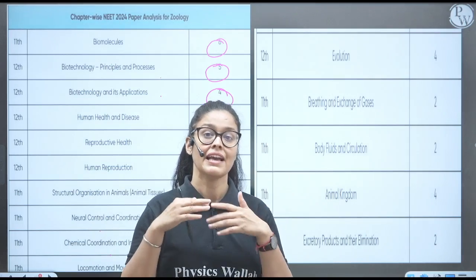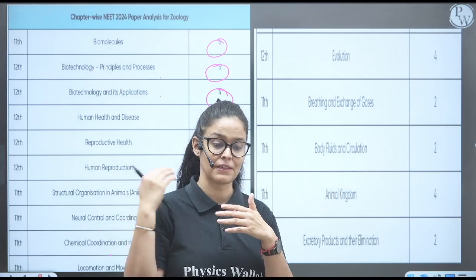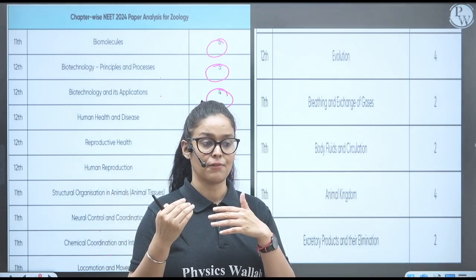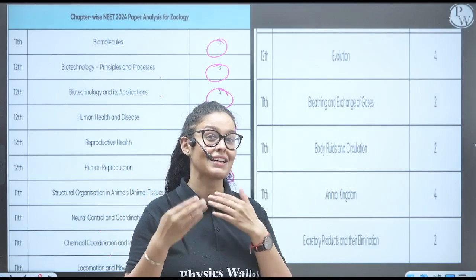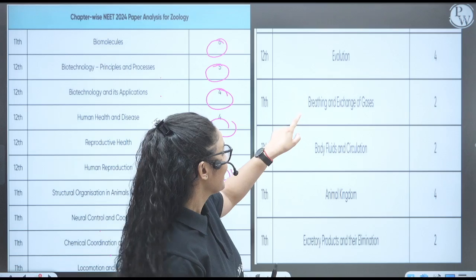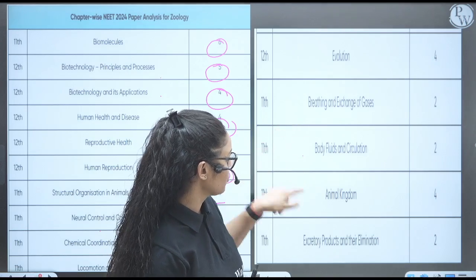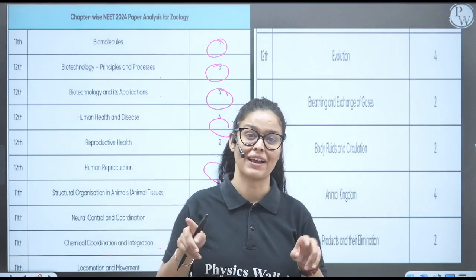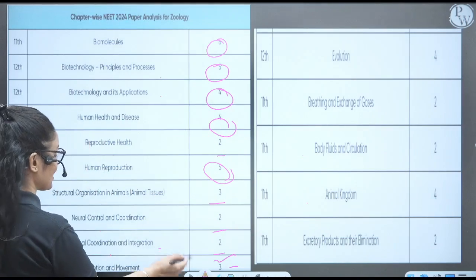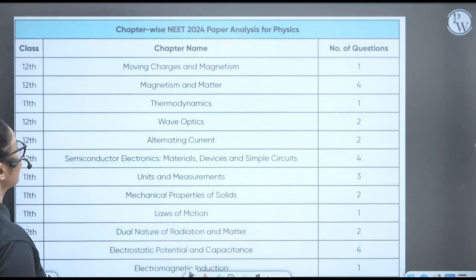From the genetics and evolution, they have asked six questions from the molecular basis, six questions from the principal basis, and four questions from the evolution alone. So see, evolution has good weightage this time. Breathing and exchange, two questions. Body fluid, two. Animal kingdom, four questions. Excretory elimination, two questions. You can see the weightage of zoology of different chapters.